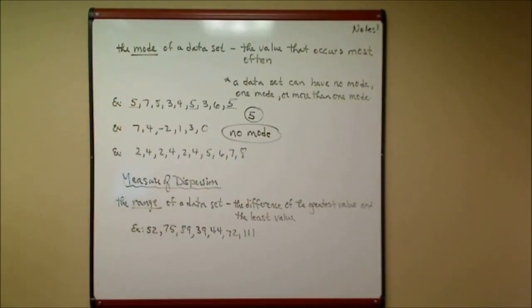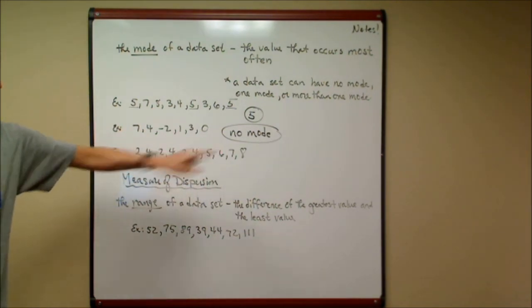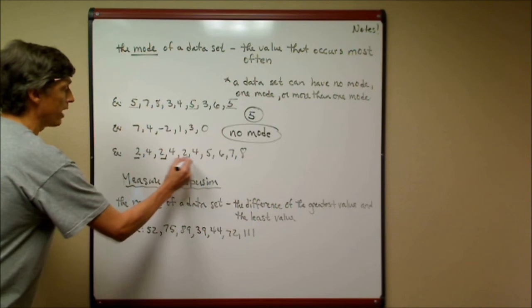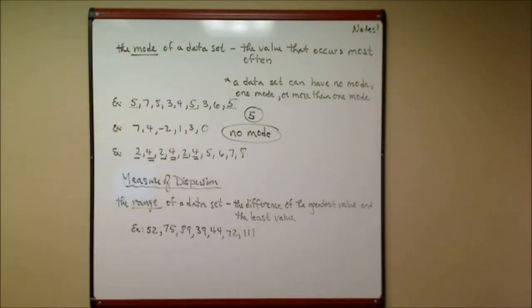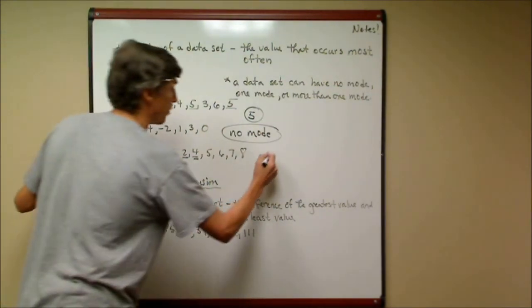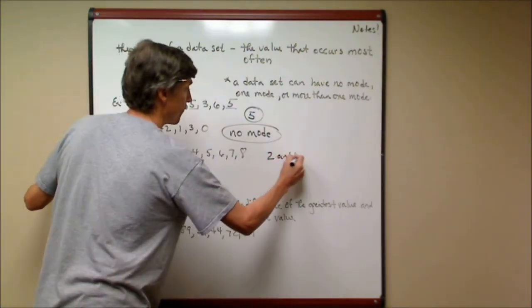This example here, you have two, four, two, four, two, four, five, six, seven, eight. You have three twos and you have three fours. None of the other numbers are repeated. You have two modes here, so your mode would be both two and four.